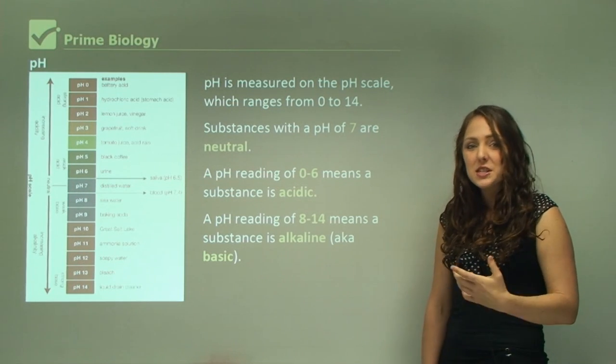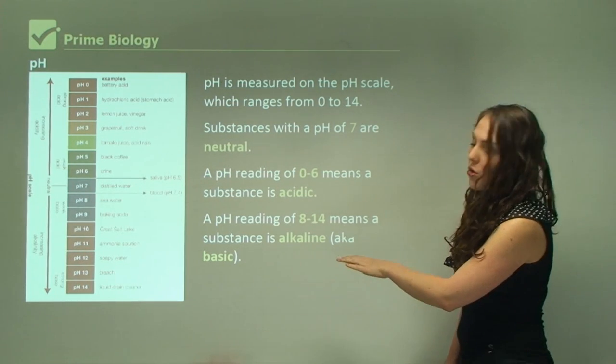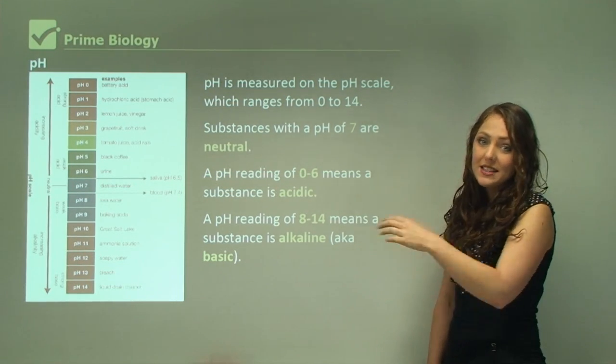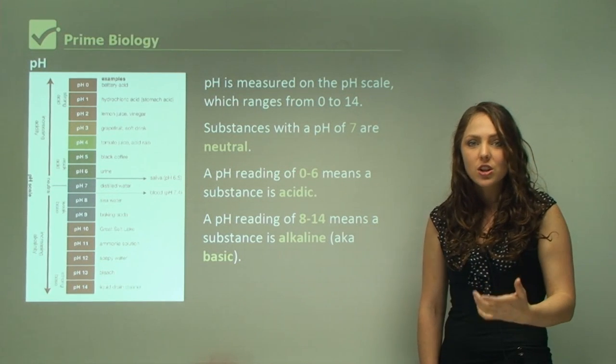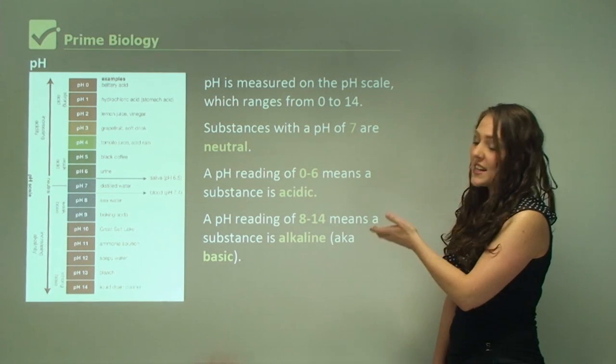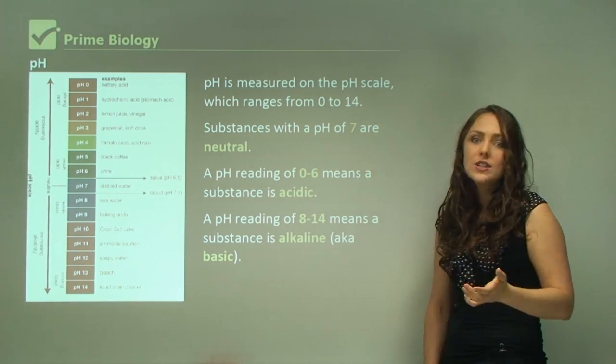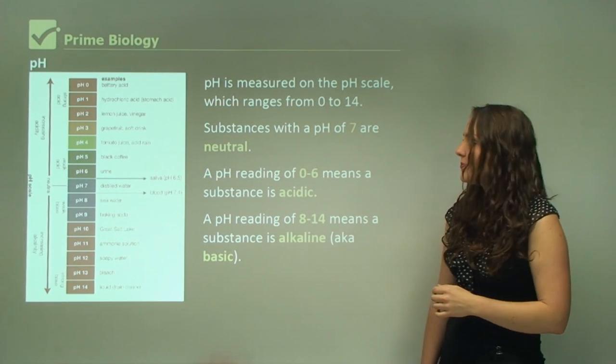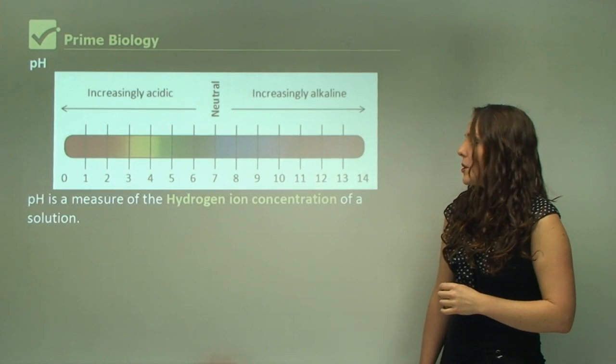A pH reading of 8 to 14 means a substance is alkaline, which means it's basic. The more towards 14 you go it's very strong alkaline solution, and the more towards 8, so pH of 8 is only just slightly alkaline.